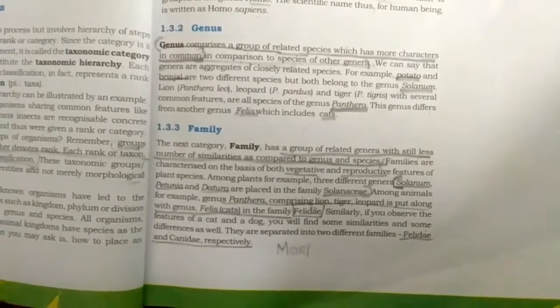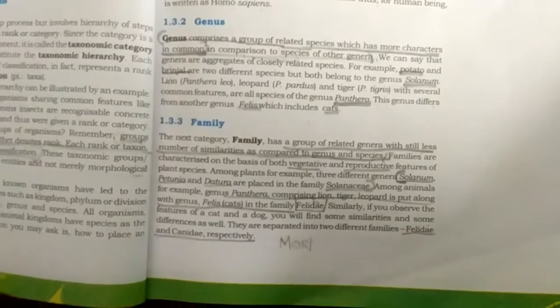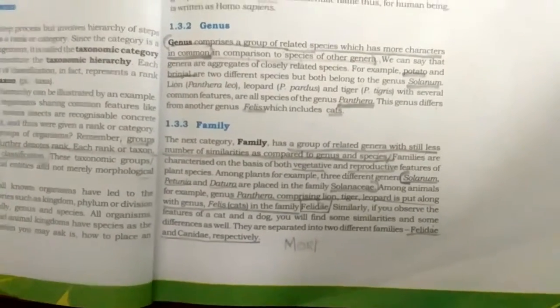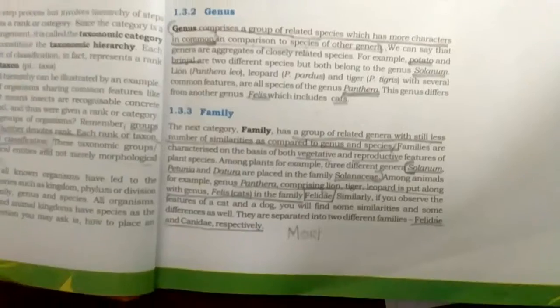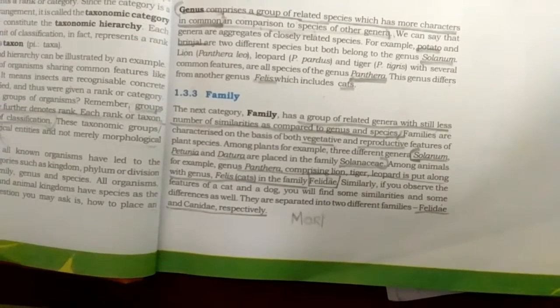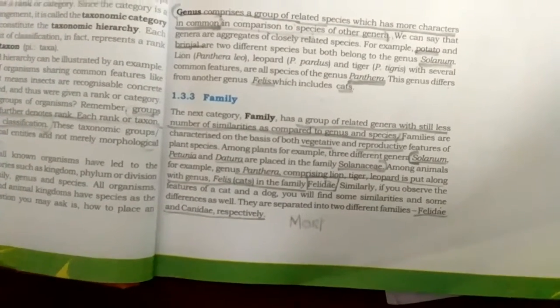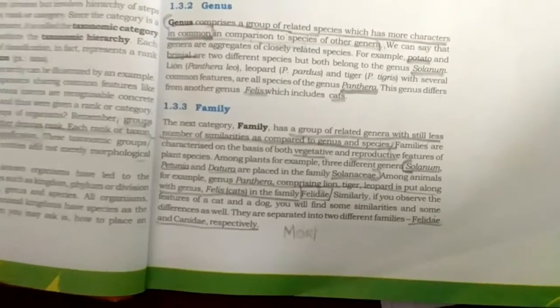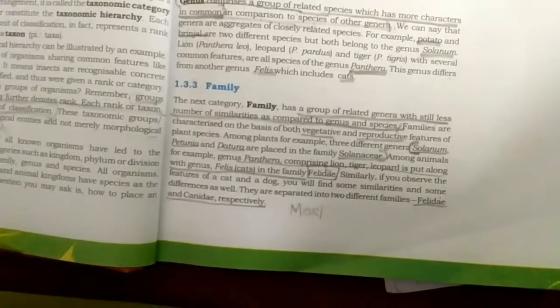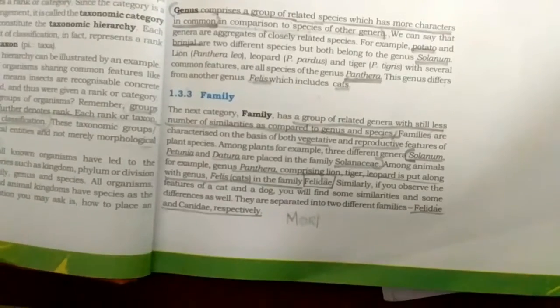Family is nothing but a group of related genera with still less similarities compared to genus and species. Big cats — lion, tiger, panther — they are all of one family. I hope you understand this.